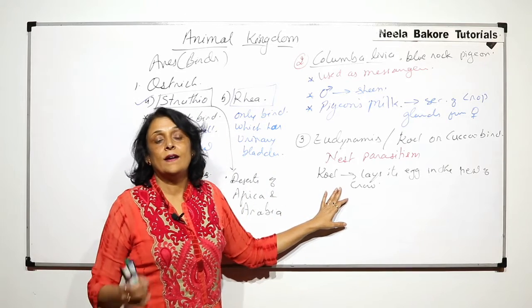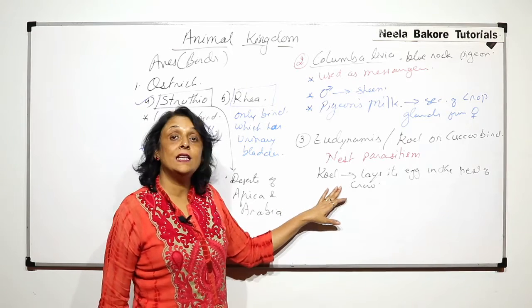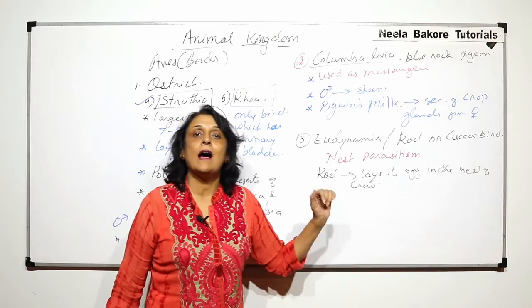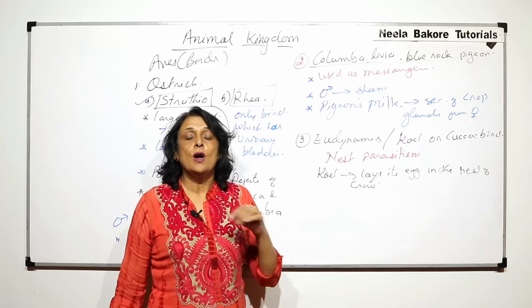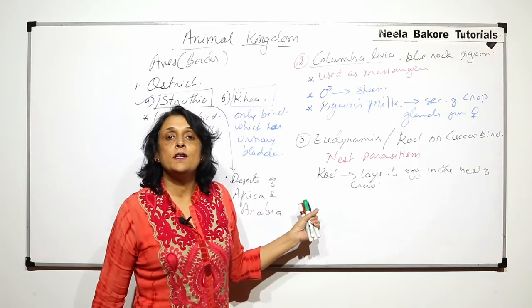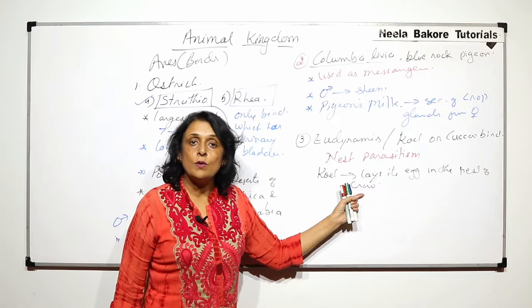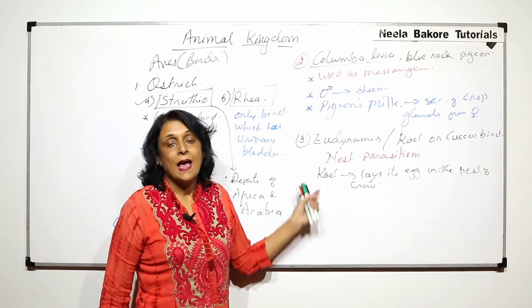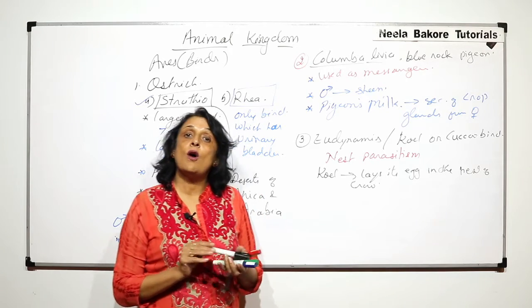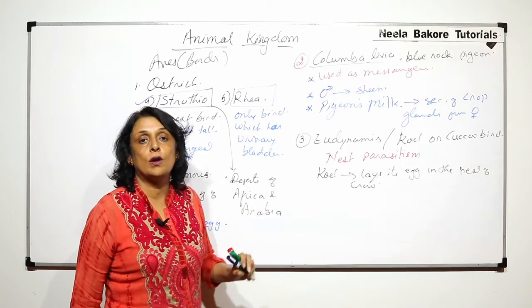Once the young ones hatch, the young ones of cuckoo bird, they either drop the crow's eggs out of the nest or even kick out the young ones of the crow. So unless and until they grow to a substantial size, it is very difficult for the crows to identify whether they are the crow young ones or the coel young ones. And as soon as they become grown enough to fly, they leave the nest. So this is called nest parasitism, which is seen in case of Eudinemis or cuckoo bird.